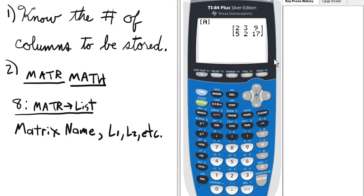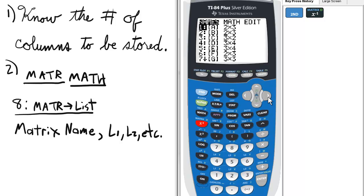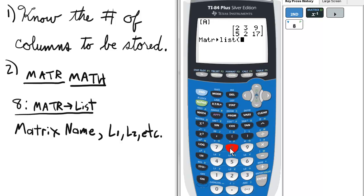Otherwise, if you know, that's awesome. Second, we're going to go to the matrix menu, and then we want to go to the math, and then we want to select option 8, which is matrix to list.